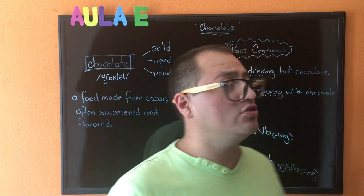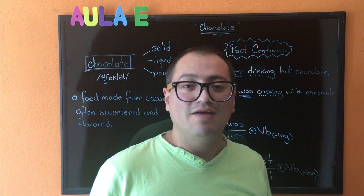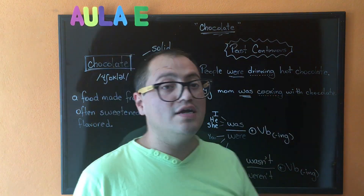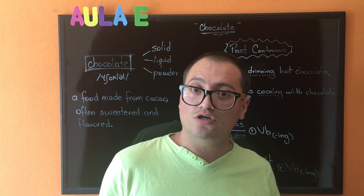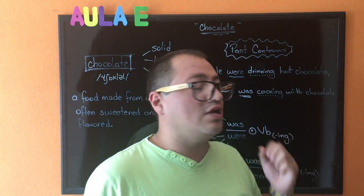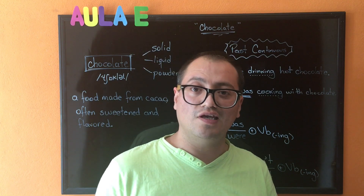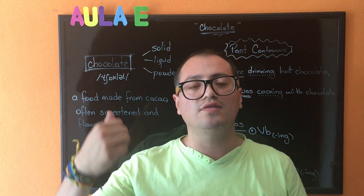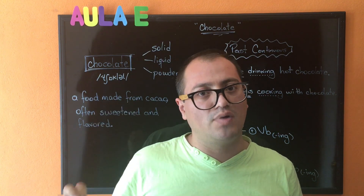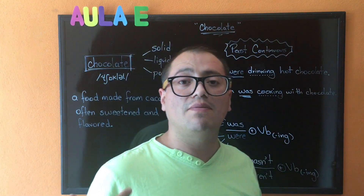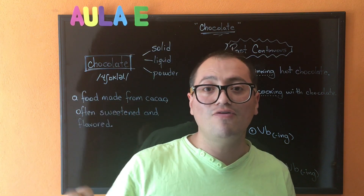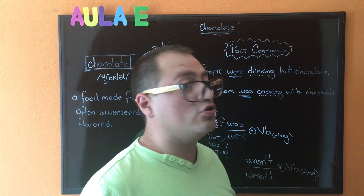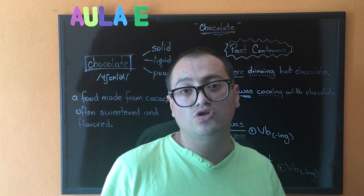For this topic we're going to use past continuous to talk about it. Vamos a utilizar el pasado continuo para este tema. Look at examples: People were drinking hot chocolate. My mom was cooking with chocolate. Vamos a utilizar el pasado continuo para hablar de cosas que ya sucedieron en un tiempo específico. Por ejemplo, la gente estuvo tomando chocolate caliente. Mi mamá estuvo cocinando con chocolate.